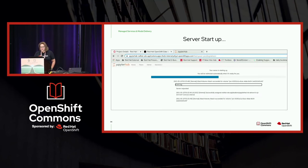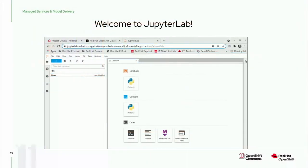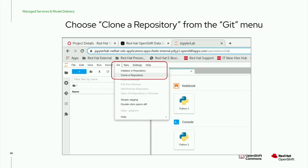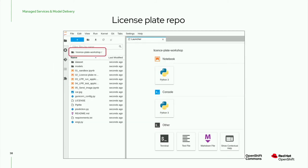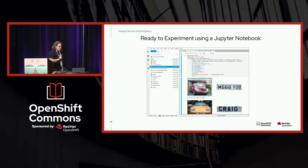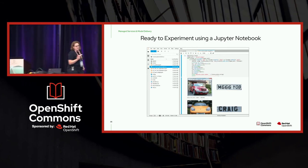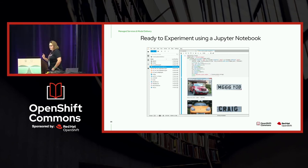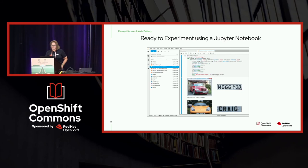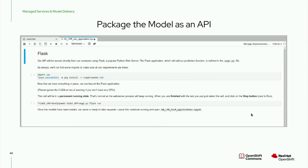We start the server, it spins up, and we pop right into JupyterLab — giving the data scientist an environment to create their work. They'll want to clone an existing repository, in this case the license plate workshop, and then see all the associated files. We do what a data scientist does: start experimenting within that notebook to create a model that can successfully extract the license plate. When it's time to deploy, you don't deploy as a Jupyter notebook — what we want to do is package the model as an API.